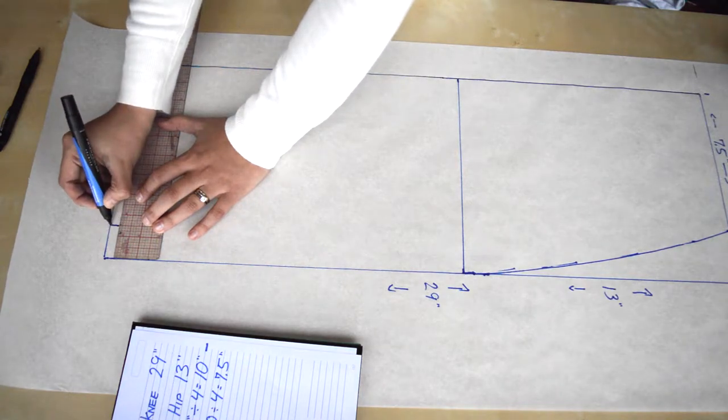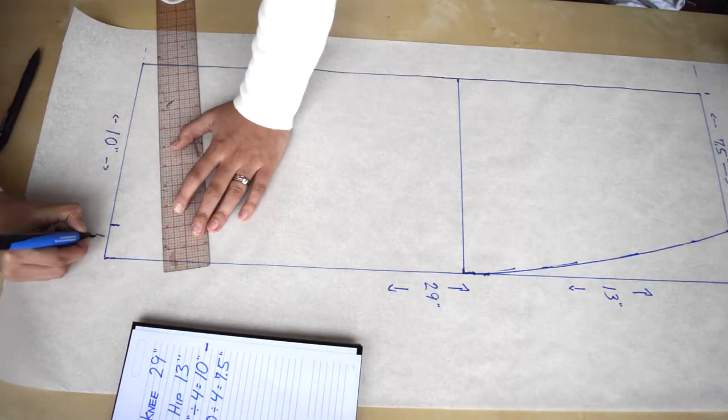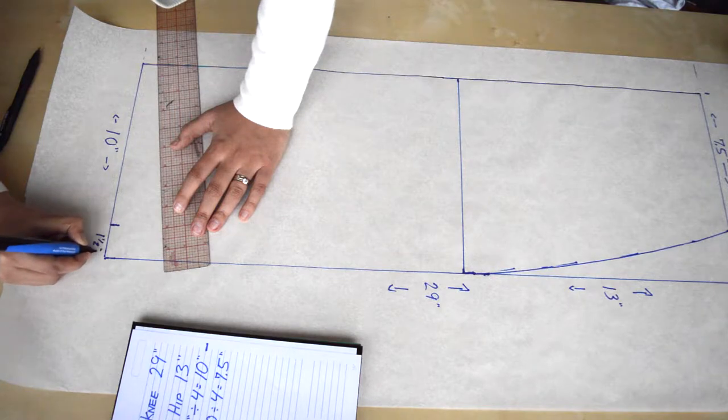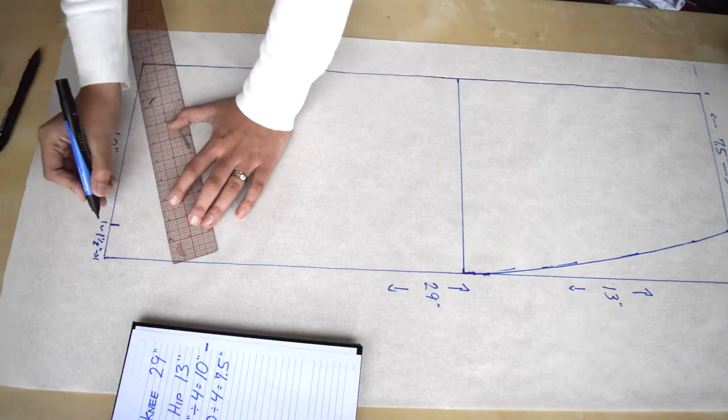Then I'm going to taper in my skirt bottom. I think it gives a little bit more of a fitted silhouette, so I'm going to taper it in an inch and a half and then connect that with my hip line.